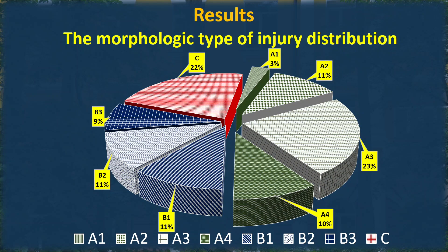The morphologic type of injury distribution is presented in the diagram. Almost half of all injuries are type A, a quarter is type C, and the rest is type B.